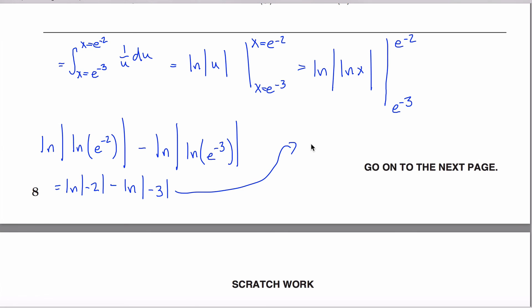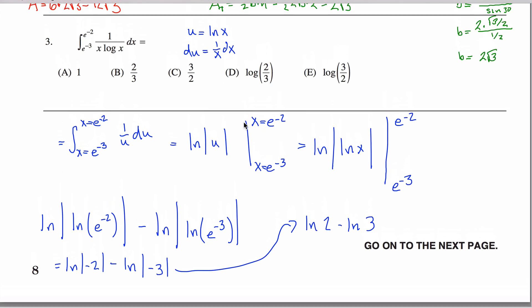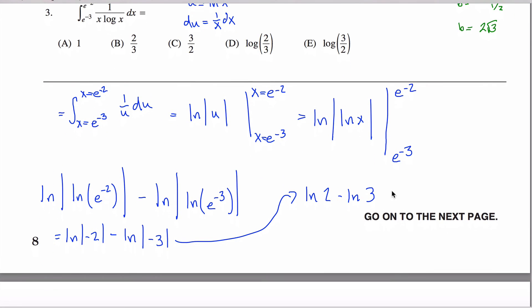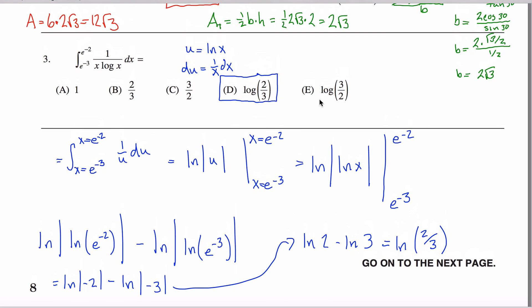Take that one step further, and write that as natural log two minus natural log of three. Actually, I can take that a step further, this is correct, but if I remember right, that doesn't show up up here. What happened? What did I do wrong? Well, you can apply a log rule here, right? The log of a quotient is equal to the difference in those logs, so this can be rewritten as the natural log of two-thirds, and the natural log of two-thirds is written right here, answer D. So that's the answer to this problem.